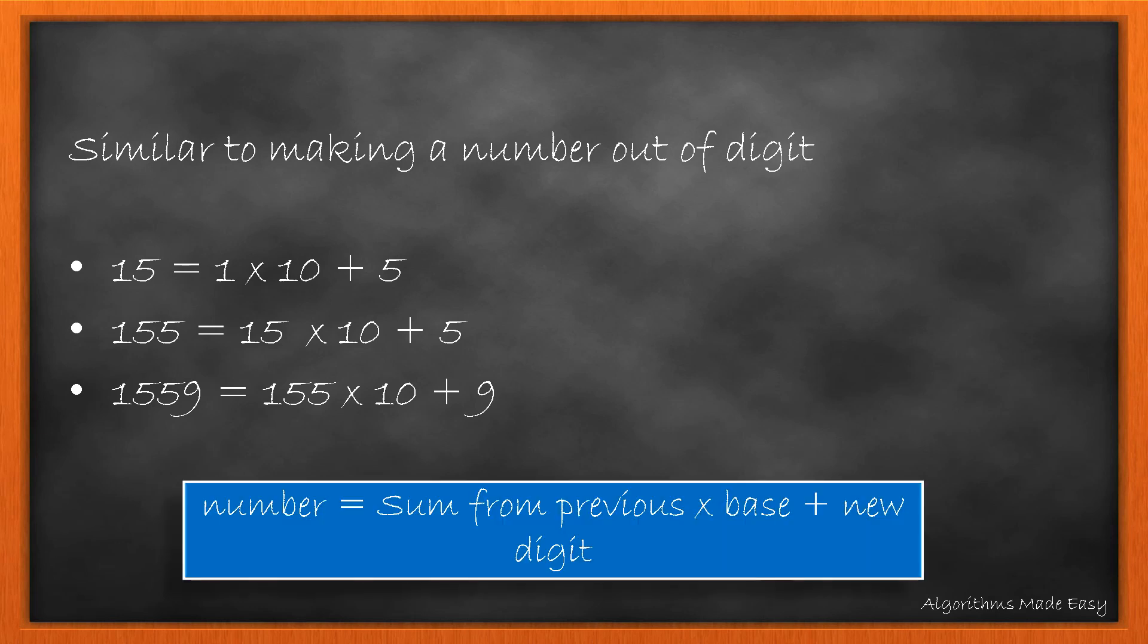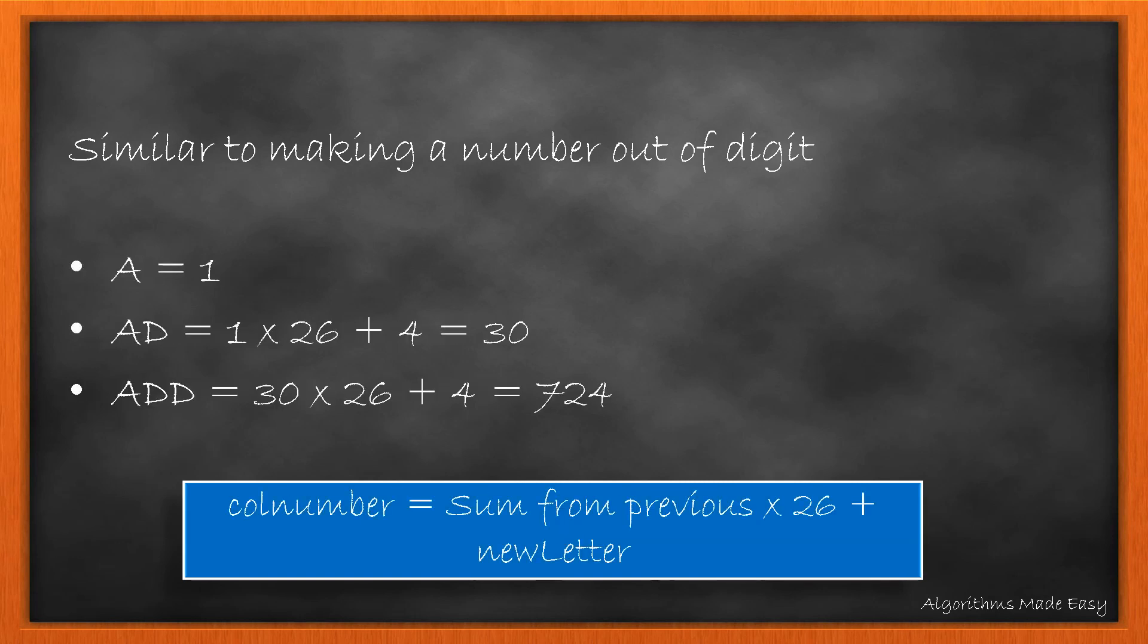We see that we can generate the number in an incremental fashion by using previous number and multiplying it with the base. As decimal is base 10, we have used 10 as a multiplier. For our case, the multiplier would be 26 as we have a base 26 format.